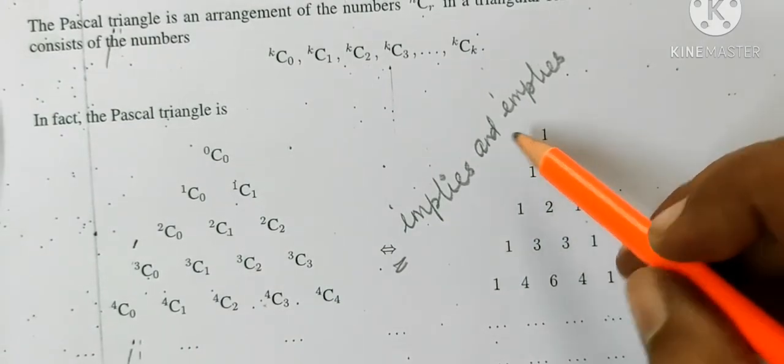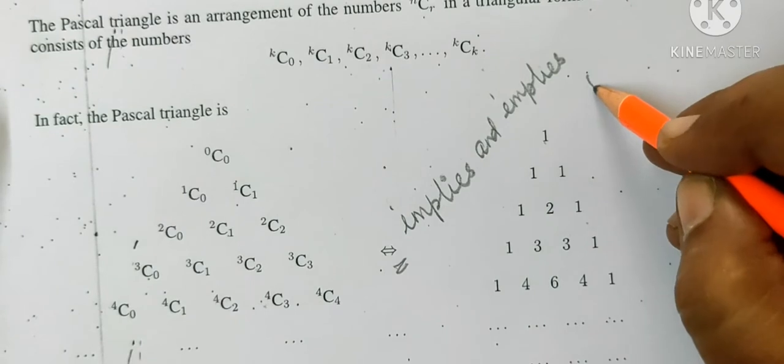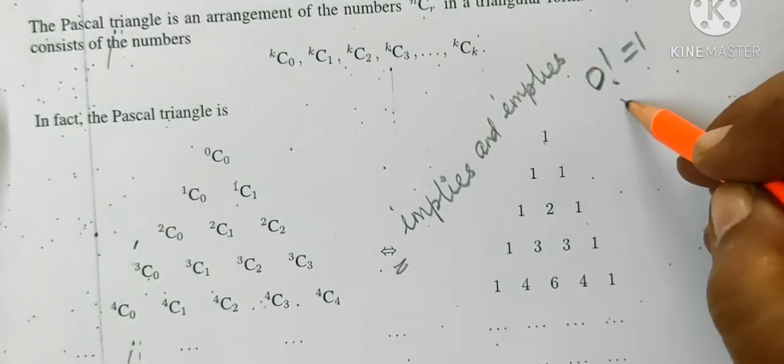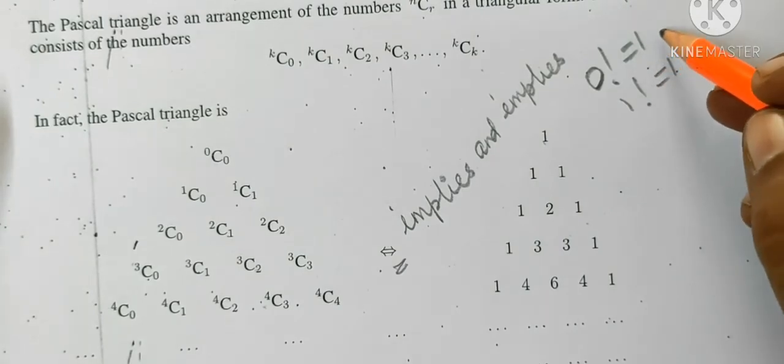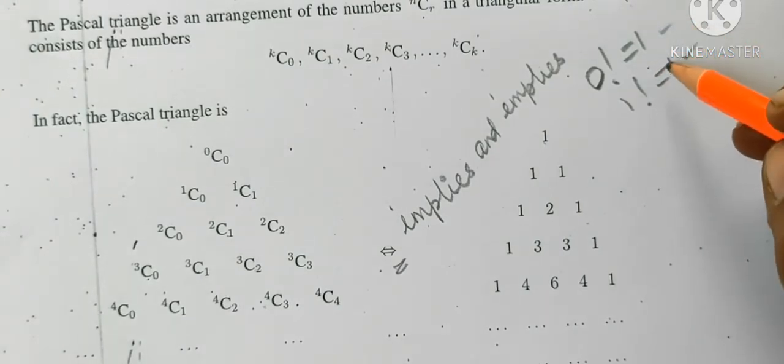One is the main thing. We know zero factorial equal to one. That means one factorial equal to one. This is the fourth chapter result.